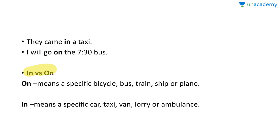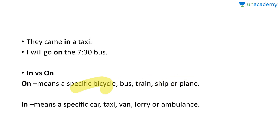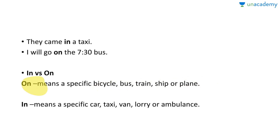Let's look at 'on' versus 'in' in this case. 'On' is used for a specific bicycle, bus, train, ship, or plane. If it is a proper noun bicycle, bus, train, ship, or plane, we use 'on'. But if it is a car, taxi, van, lorry, or ambulance, we use 'in'. So we say 'in a car', 'in a taxi'. For example: they came in a taxi.